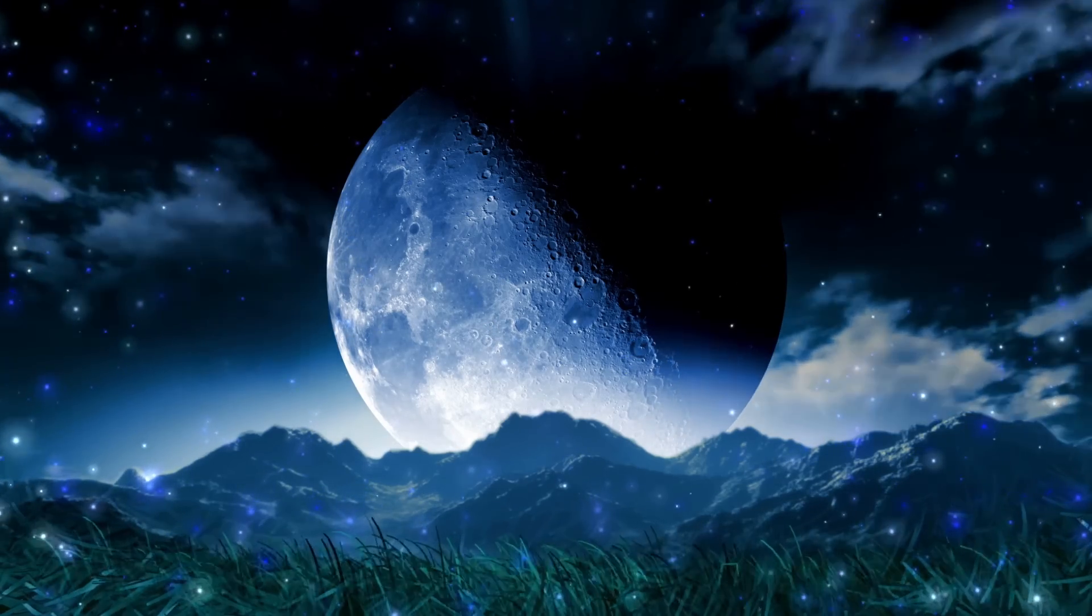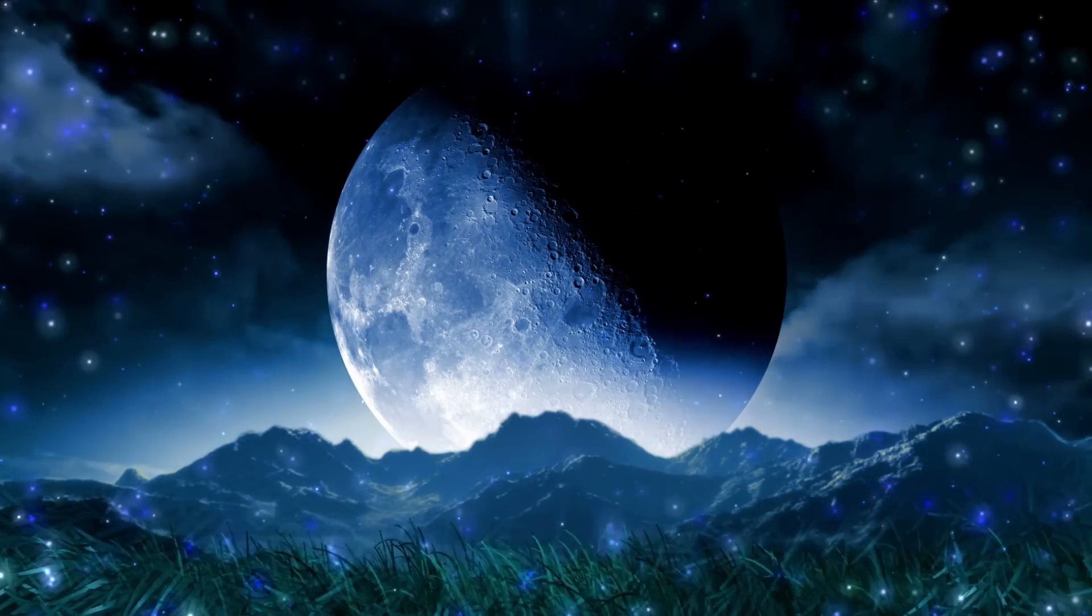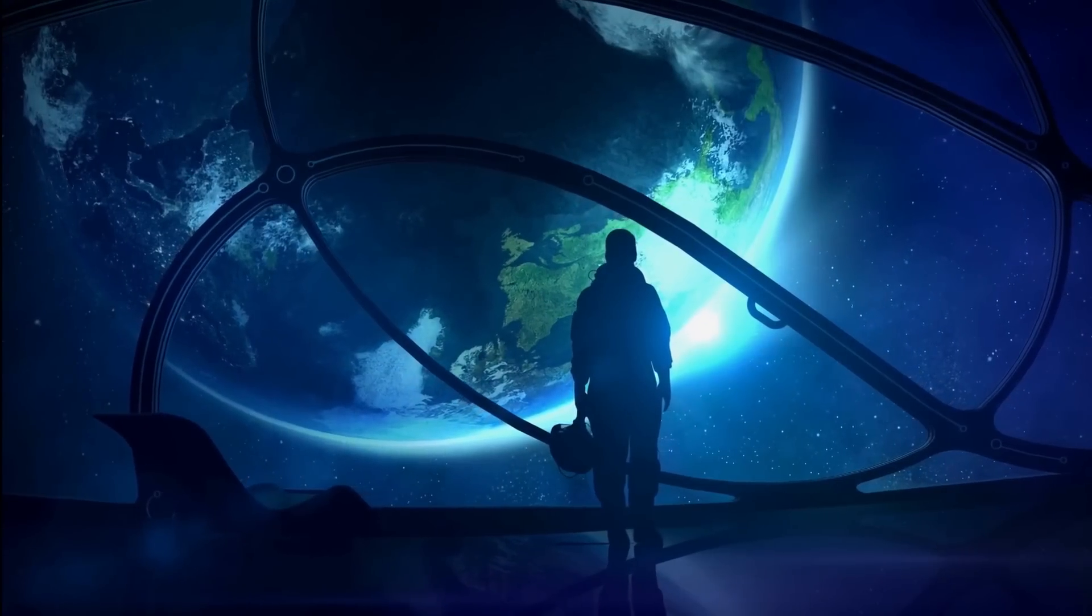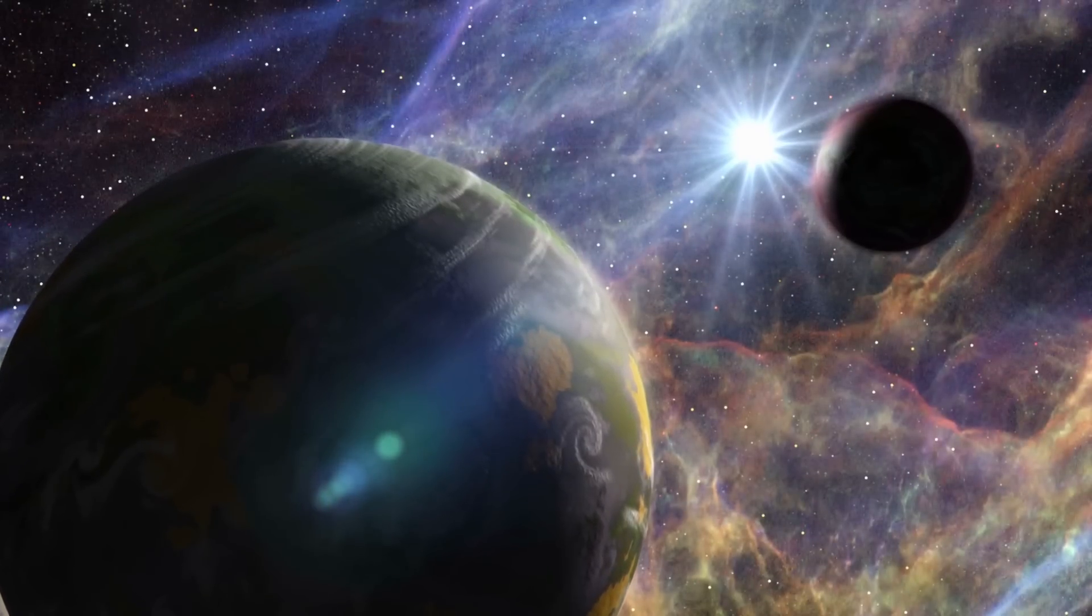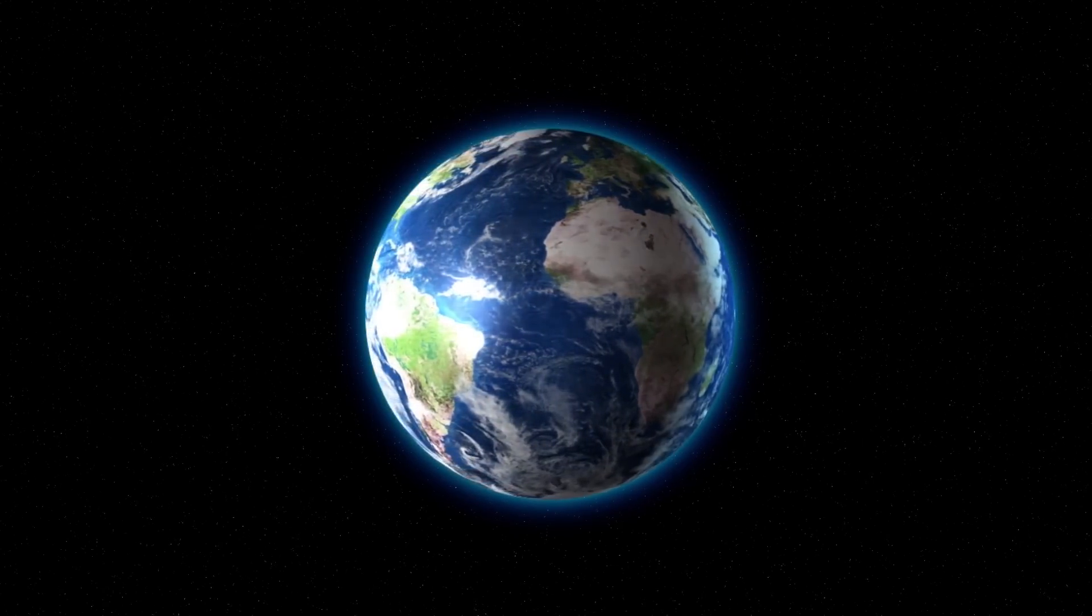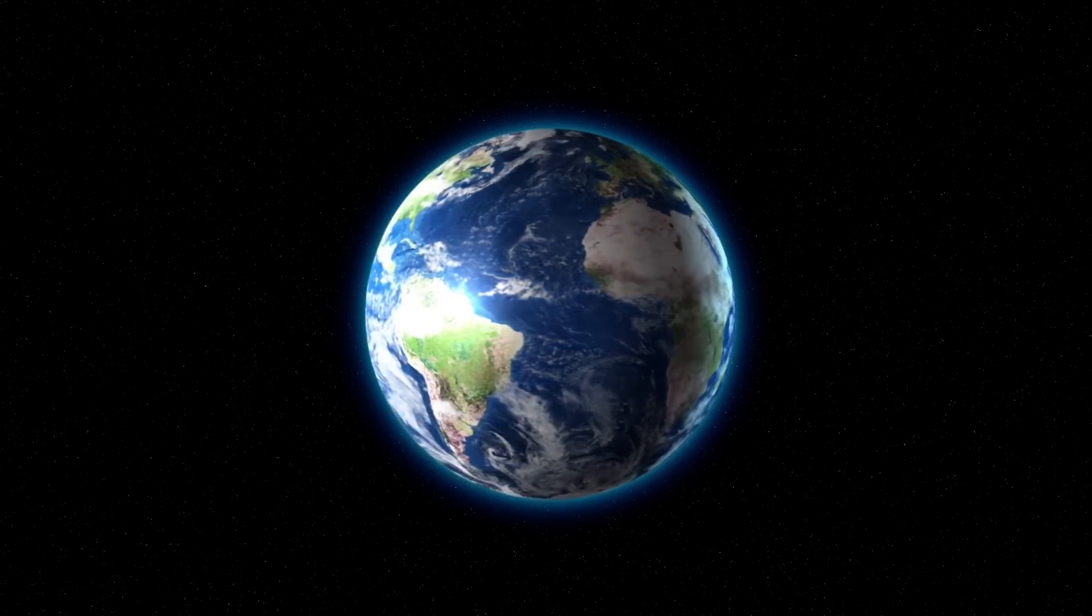Finding habitable exoplanets in the universe which could potentially support life has become one of the biggest focuses of astronomy in recent years. One such exoplanet that scientists have had a close eye on is Proxima b. It is one of the closest ever discovered to the solar system with striking similarities to Earth.